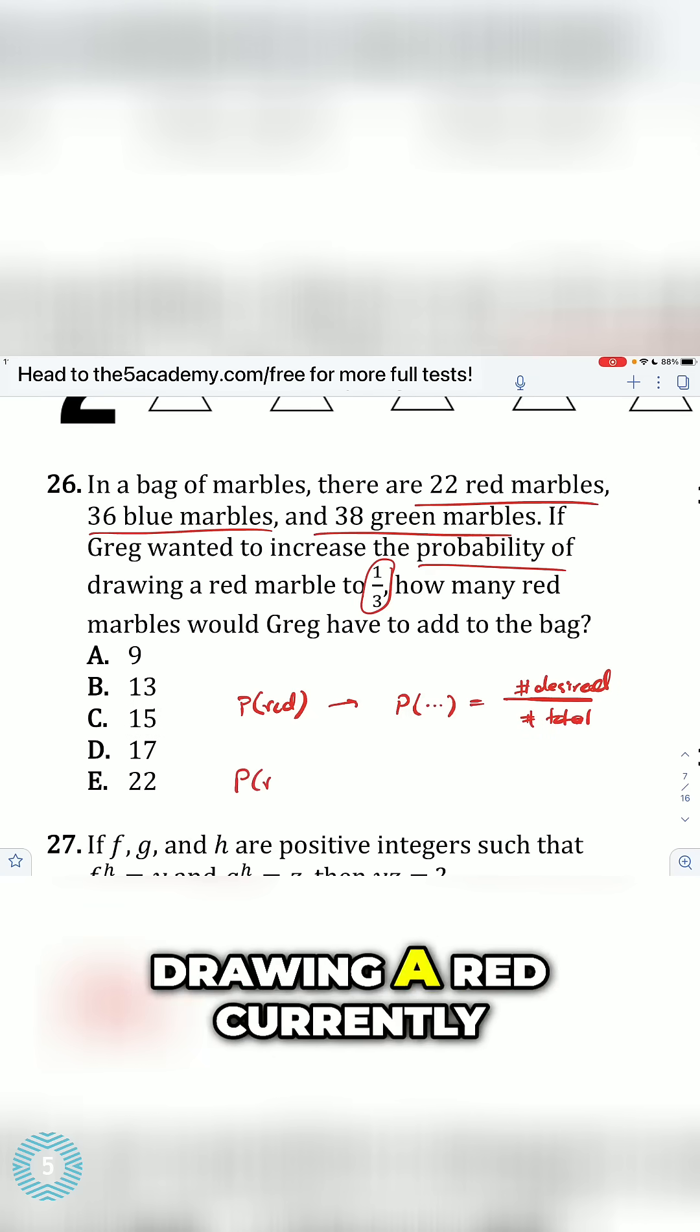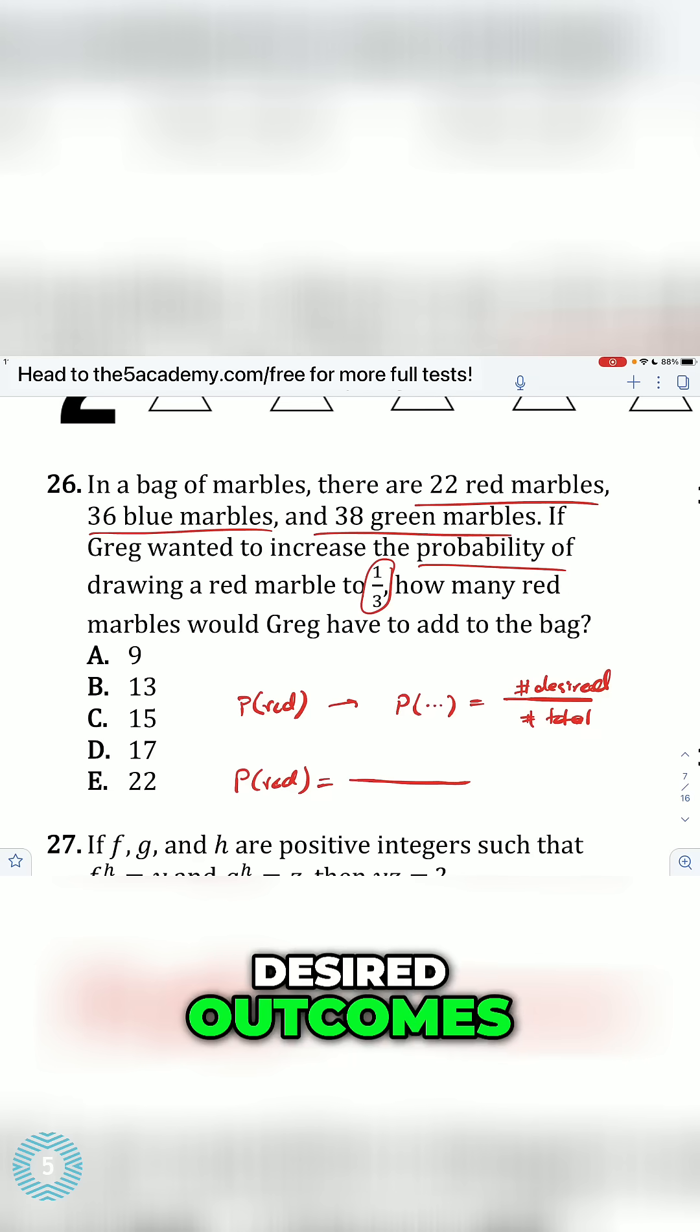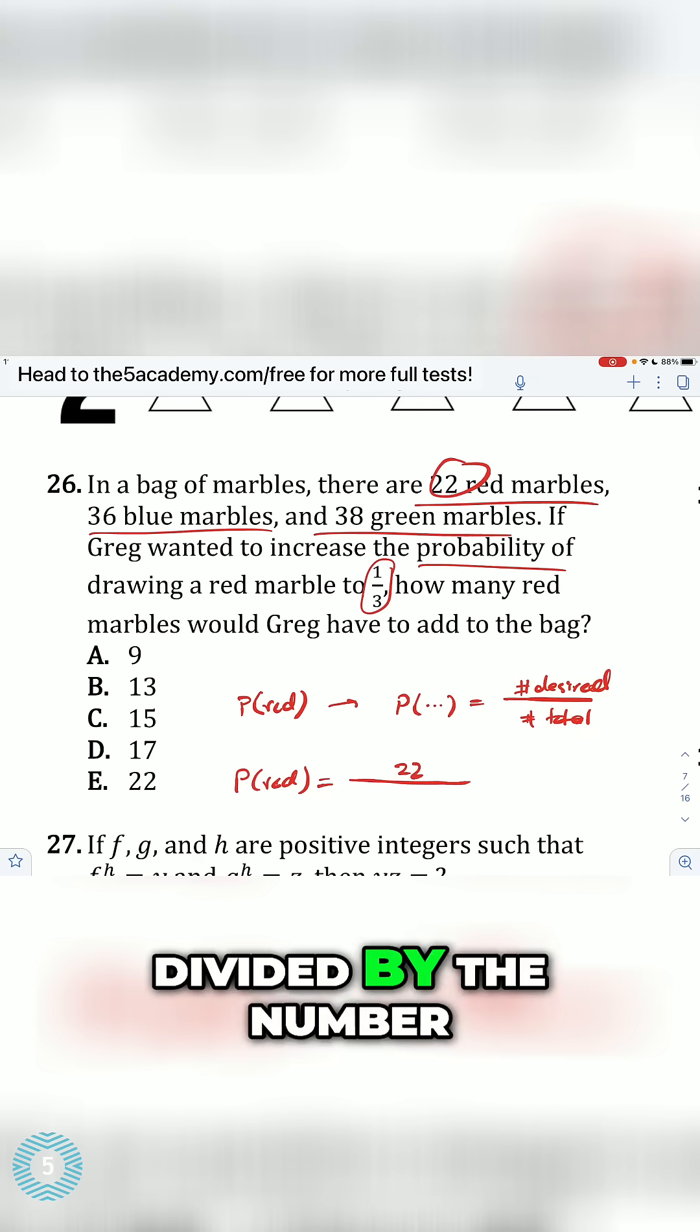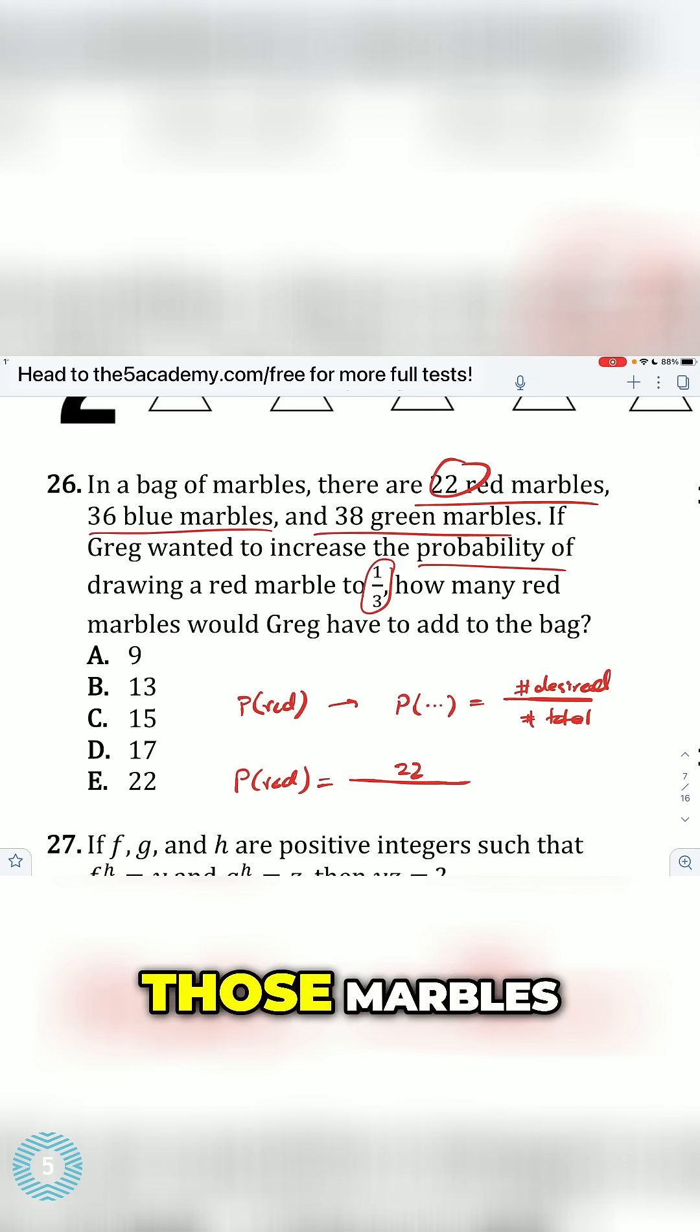So the probability of drawing a red currently is the number of desired outcomes, 22, divided by the number of total outcomes, which is just the sum of all of those marbles.